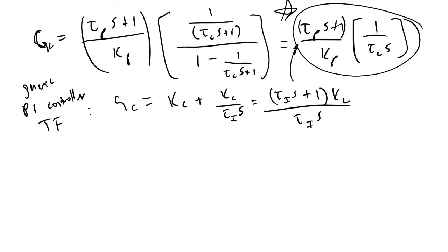And so what we can do via the direct synthesis model, we can now say that if we wanted to know what the gain of our controller should be for a first order process, it will be equivalent to tau_p divided by Kp times tau_c and tau_c will be equal to tau_I.